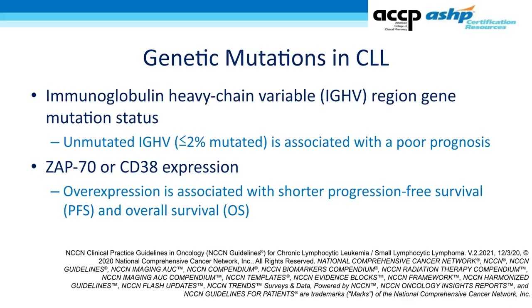If the IGHV mutation has already occurred, clonal evolution has already taken place; it's less likely to mutate over time and the disease is less likely to become more aggressive. We can also measure proteins on the outside of B cells, such as ZAP70 or CD38. Overexpression of either of these markers is associated with shorter progression-free and overall survival. However, ZAP70 and CD38 are not routinely measured in clinical practice — they are more study-based markers and we don't currently use them to make treatment decisions.